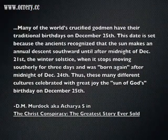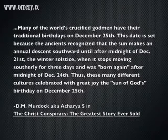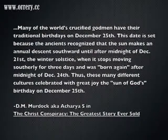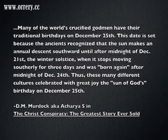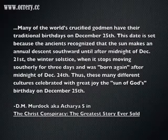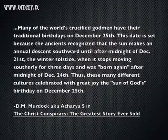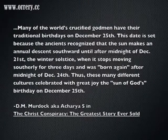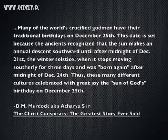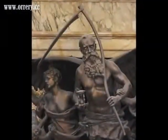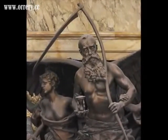Acharya S. says in the Christ Conspiracy: Many of the world's crucified godmen had their traditional birthdays on December 25. This date is set because the ancients recognized that the sun makes an annual descent southward until after midnight of December 21, the winter solstice, when it stops moving southerly for three days, and was born again after midnight of December 24. Thus, these many different cultures celebrated with great joy the sun of God's birthday on December 25. Christmas 2012 marks the beginning of a new Great Year.